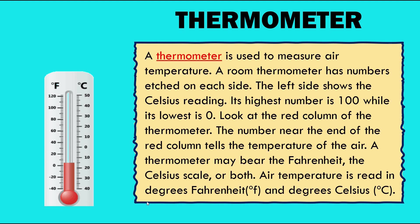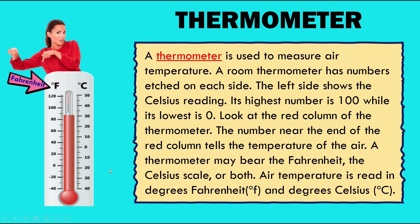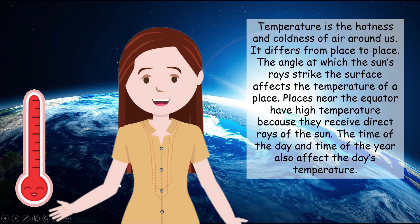What is a thermometer? A thermometer is used to measure air temperature. A room thermometer has numbers etched on each side. The left side shows the Celsius reading — its highest number is 100, while its lowest is 0. Look at the red column on the thermometer; the number near the end of the red column tells the temperature of the air. A thermometer may bear the Fahrenheit, the Celsius scale, or both.